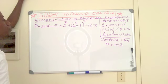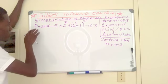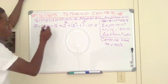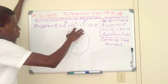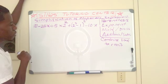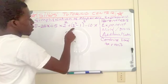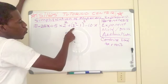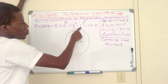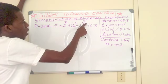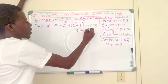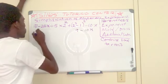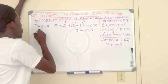We're going to do the same thing — do the parenthesis first. Two squared is four, minus one is three. That's nine. Minus 10X — everything else stays the same.